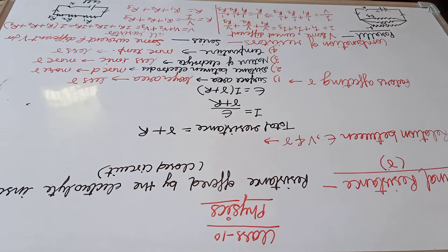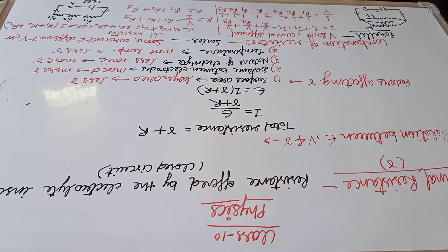When a cell is closed, meaning when the current passes through it, the electrons flow from the negative terminal to the positive terminal. Outside the cell, through the external circuit, due to the flow of free electrons, current flows from anode to cathode in the external circuit and from cathode to anode inside the cell.